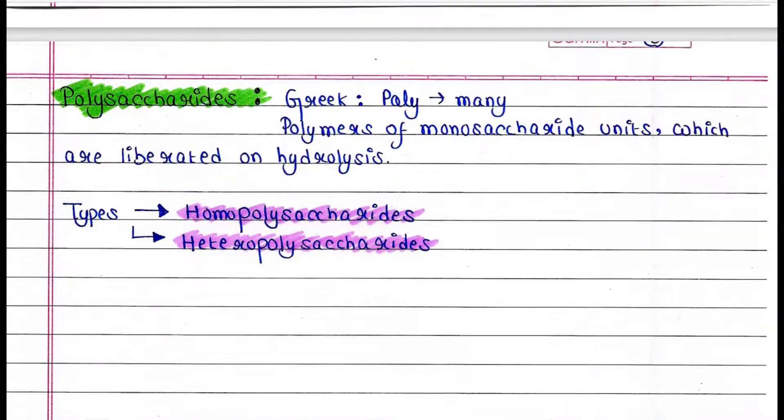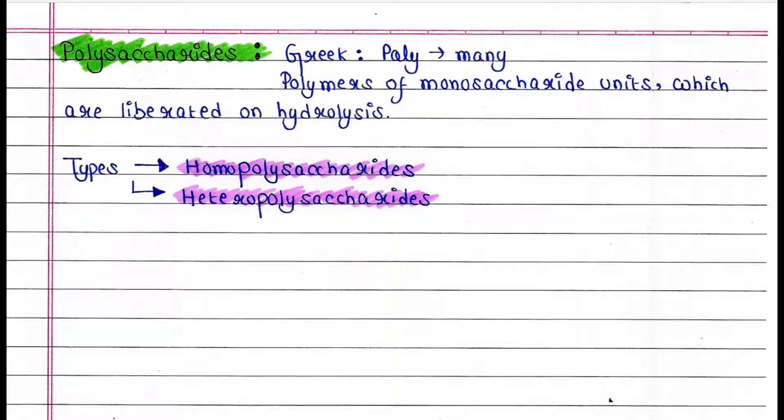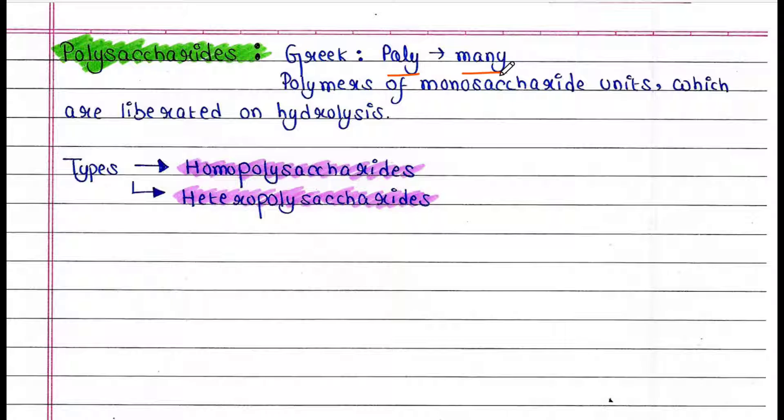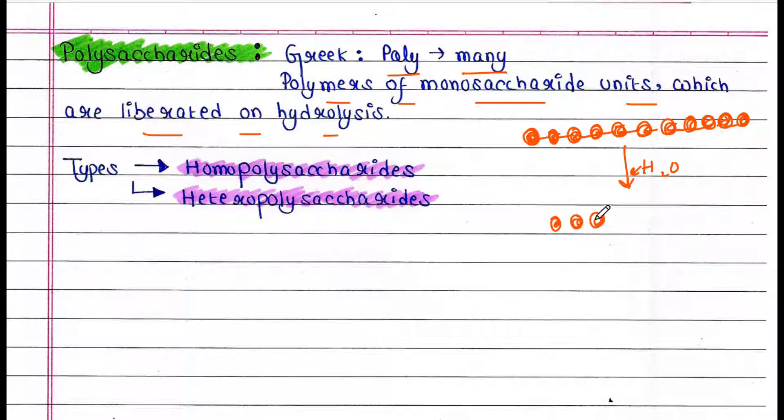Let's talk about polysaccharides. So in Greek, poly means many. It is polymers of monosaccharide units which are liberated on hydrolysis. Suppose a polysaccharide contains 15 such monosaccharides. Now you apply water. So it will break down the polysaccharide and all the monosaccharide units will be liberated in this way.